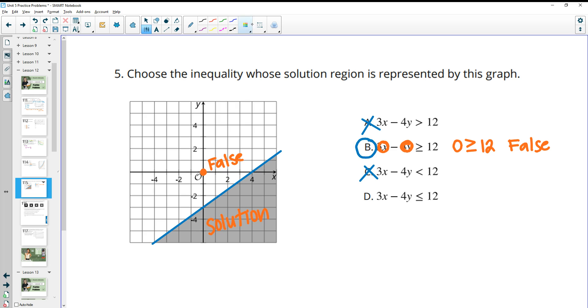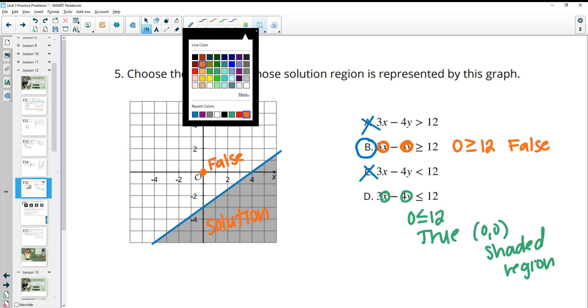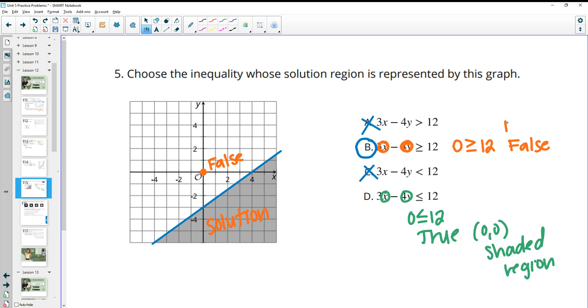Because if you plug (0,0) into this bottom one, you end up with 0 is less than or equal to 12, which is true. And that would mean that (0,0) needs to be in the shaded region. Versus when it produces a false statement, that means it's not in the shaded region, which is what matches our graph. So B is the solution.